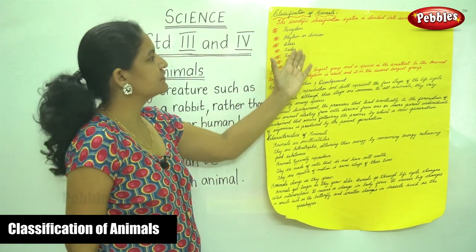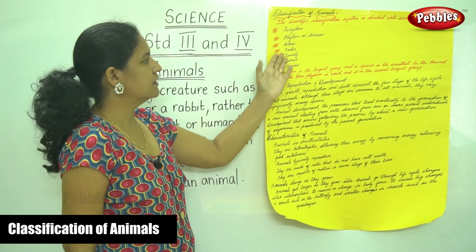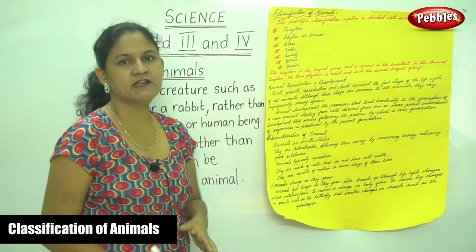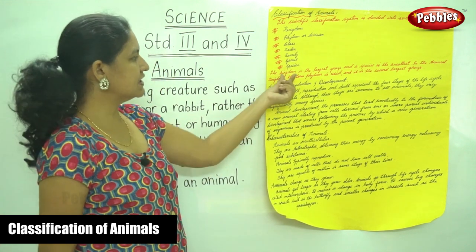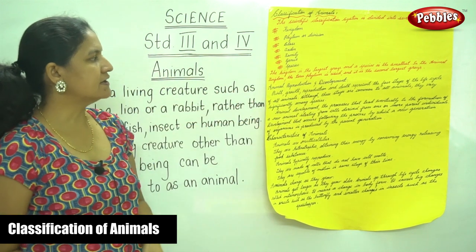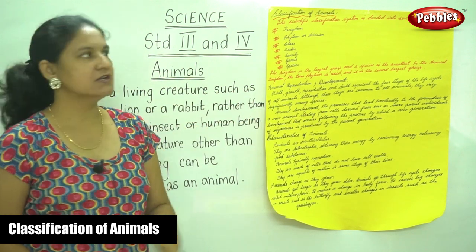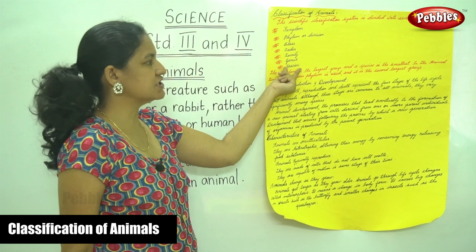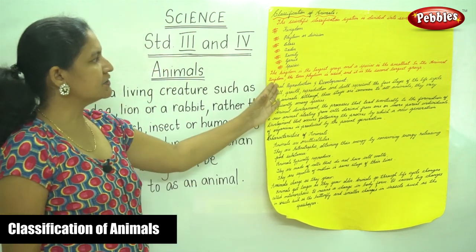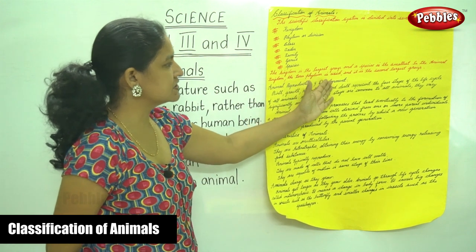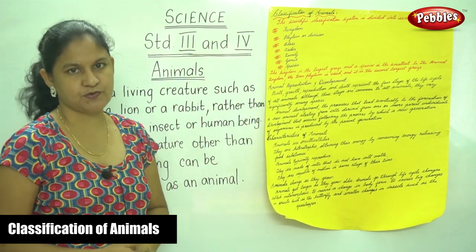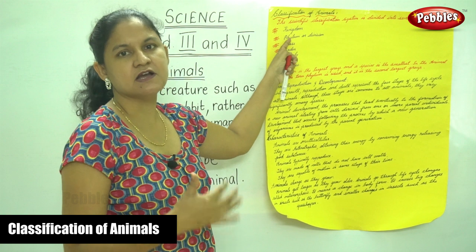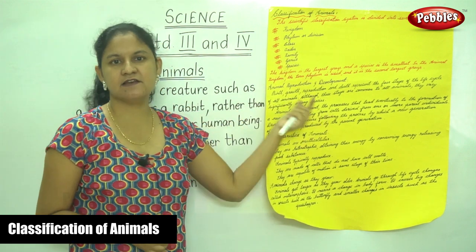The animals have been scientifically classified into seven major groups: kingdom, phylum or division, class, order, family, genus, and finally species. The kingdom is the largest group and the species is the smallest. The phylum or division is the second largest group.